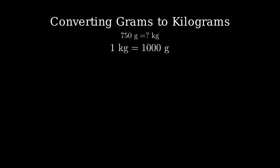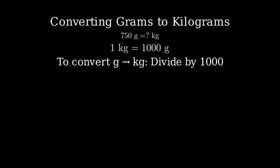First, let's understand the relationship between grams and kilograms. One kilogram is equal to 1000 grams. This means that to convert from grams to kilograms, we need to divide by 1000.